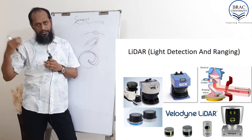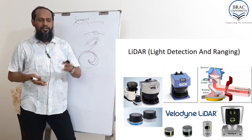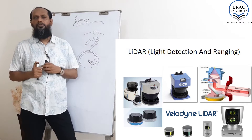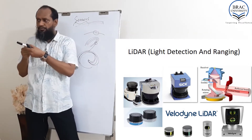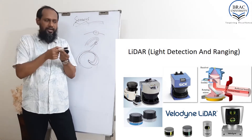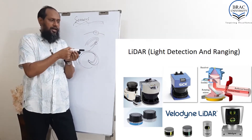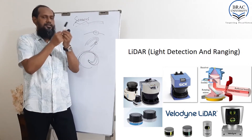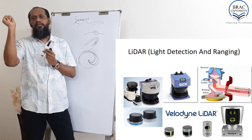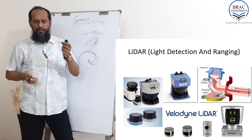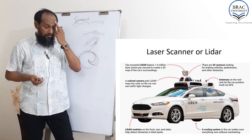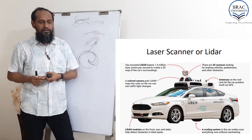By measuring this direction and the intensity of the reflected light, it's measuring the distance on each point. As I told you in a few lectures back, it's measuring each point from left to right, then bottom to up - just like a scanning. It's scanning 360 degrees - it's a very, very expensive sensor. Uber is also trying to develop this kind of autonomous car to use on the road.